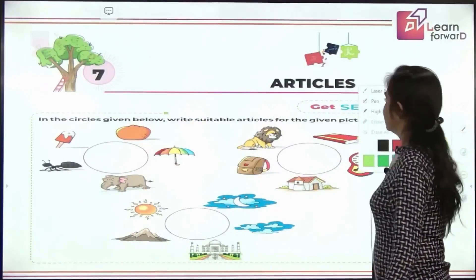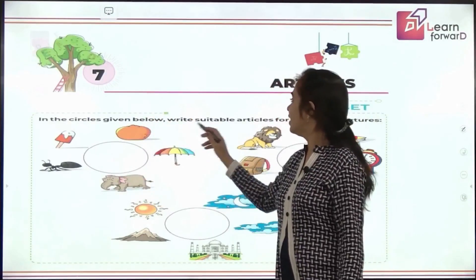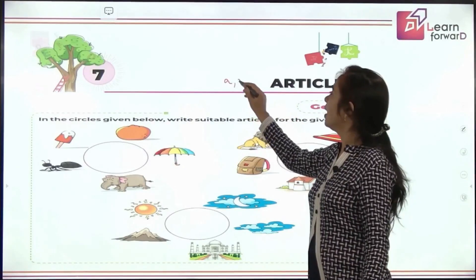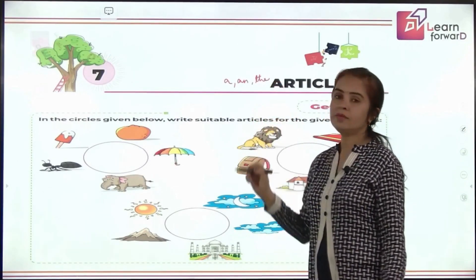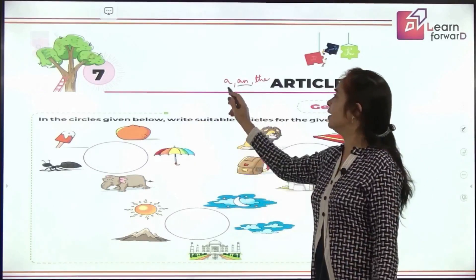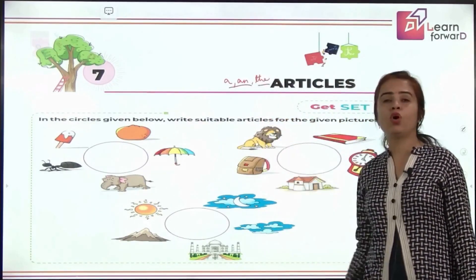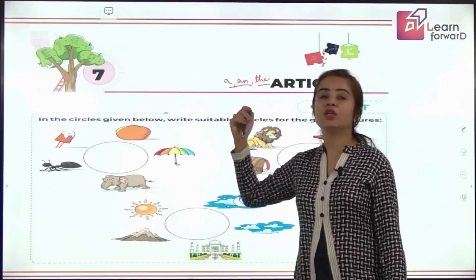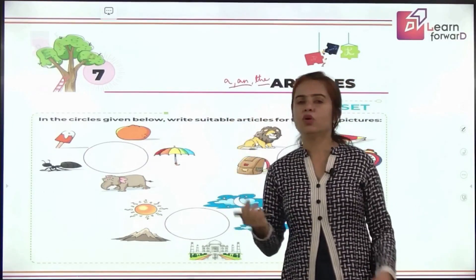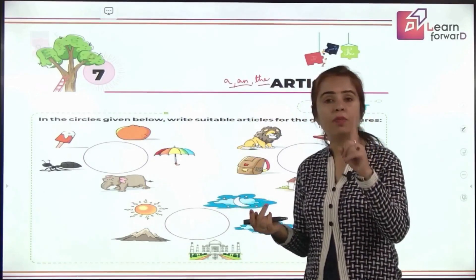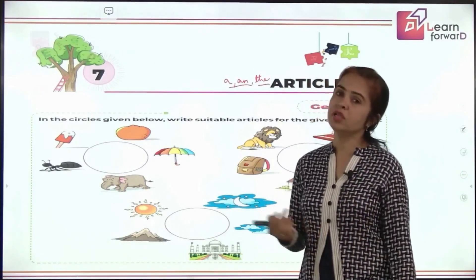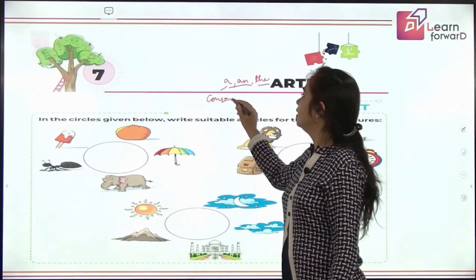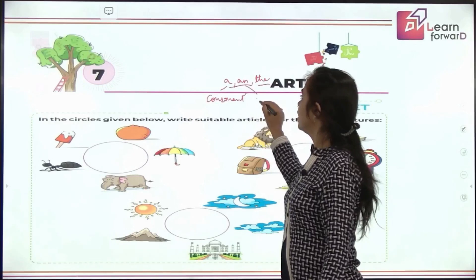In the circles given below, write the suitable article. We have done three articles: a, an, and the. Let's quickly recall — a and an are indefinite, and the is definite. The is used before the names of specific things. A and an are used when we talk about something in general, about one thing. The difference between a and an: a is used with a consonant sound and an is used before a vowel sound.